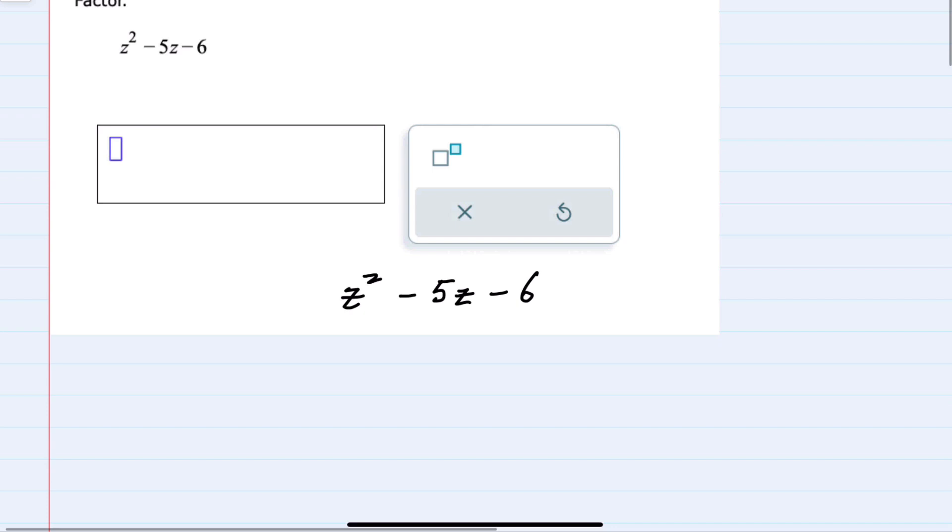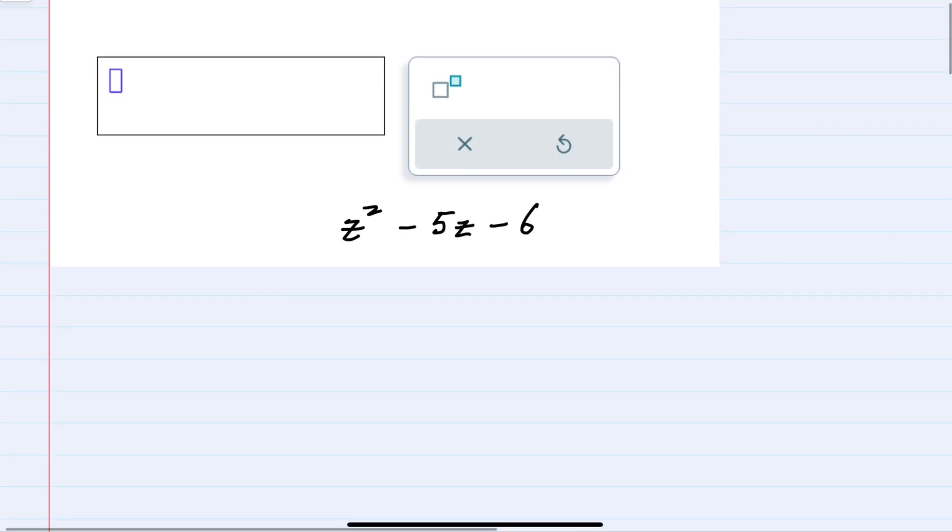The method that we'll be using here is just trial and error. We know that whenever we factor a trinomial it would factor as two binomials. The first term in each of those binomials is determined by the first term in the trinomial.